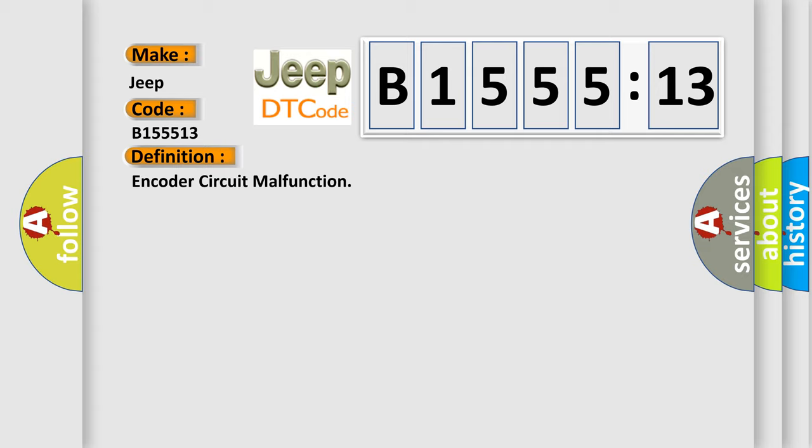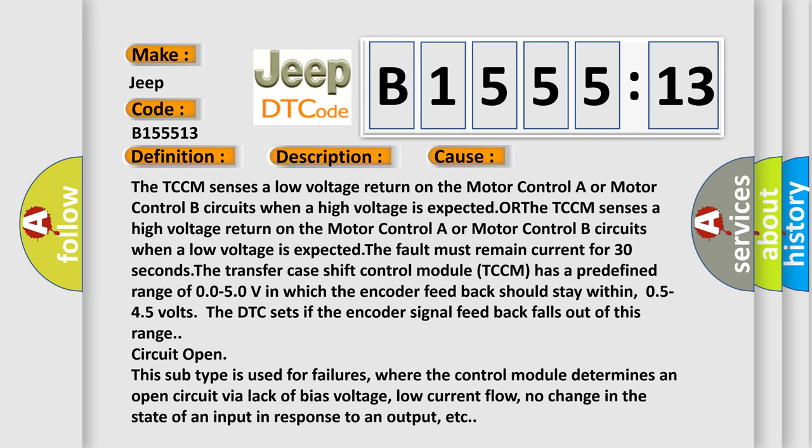The basic definition is encoder circuit malfunction. And now this is a short description of this DTC code. Ignition on system voltage 9 to 18 volts. This diagnostic error occurs most often in these cases.